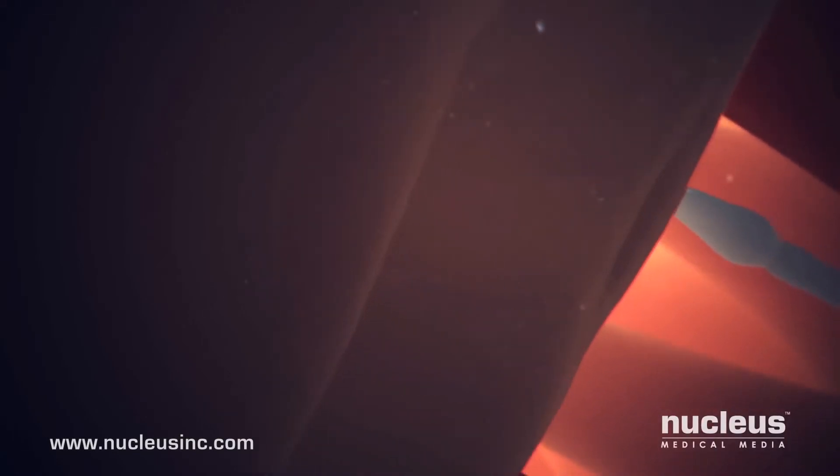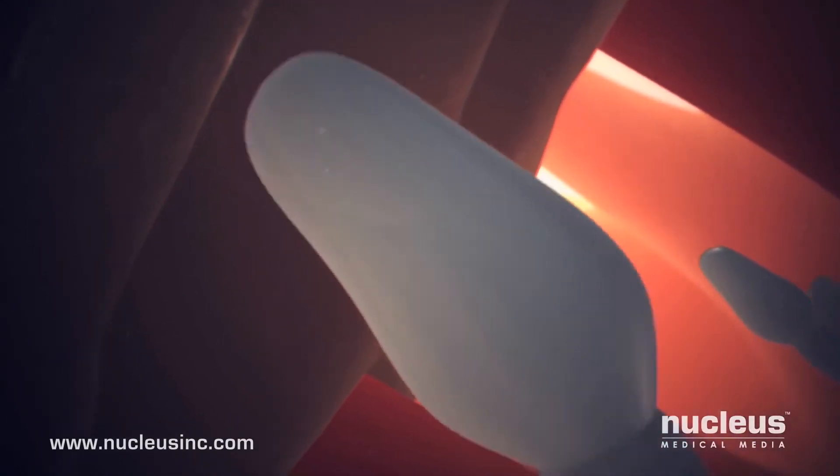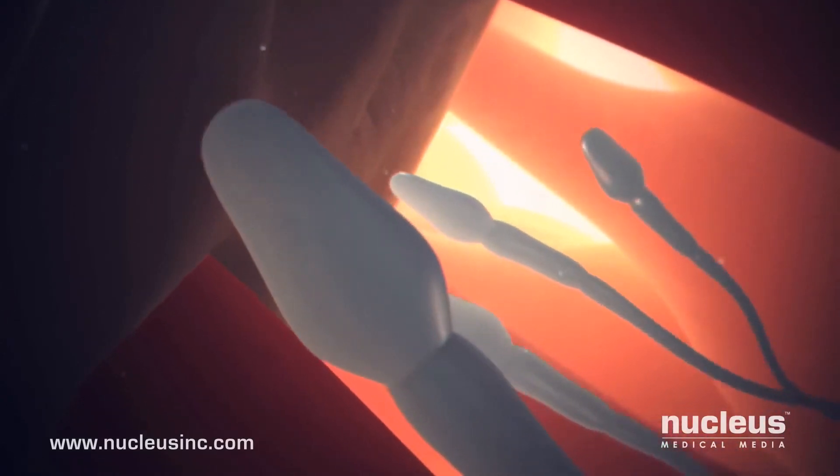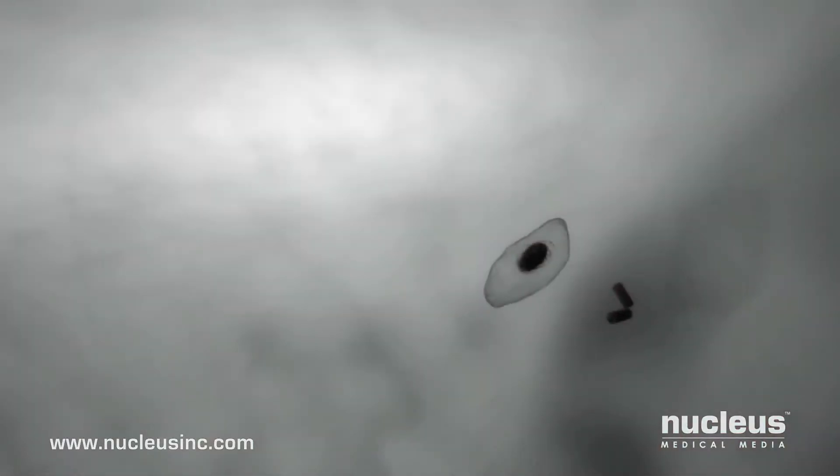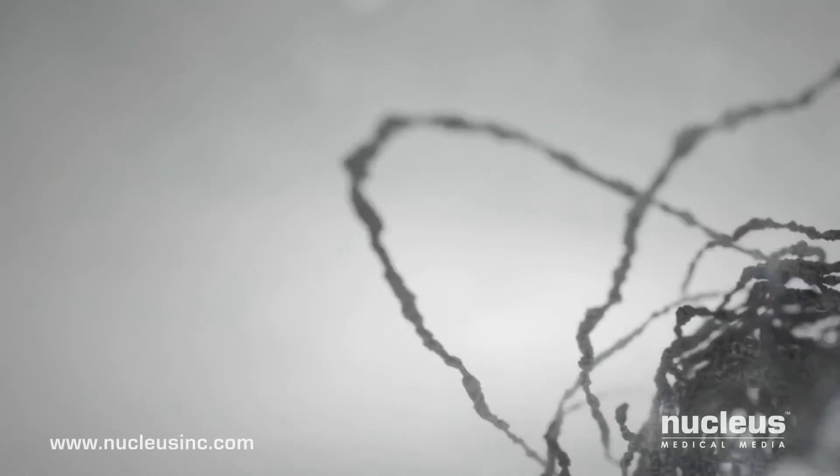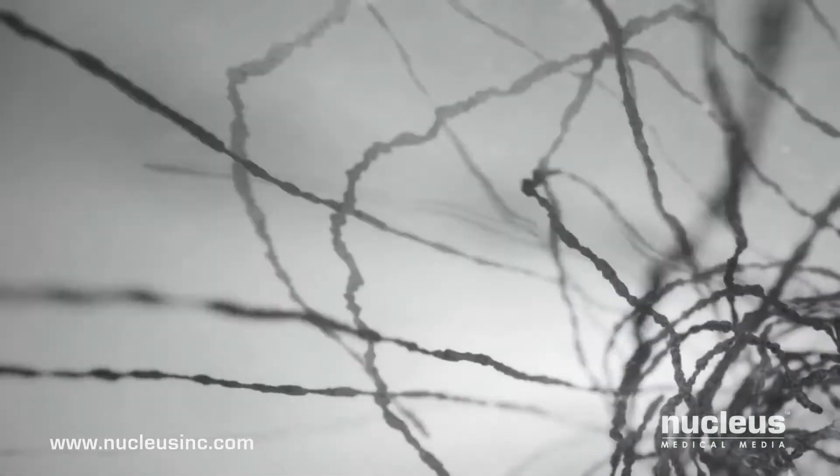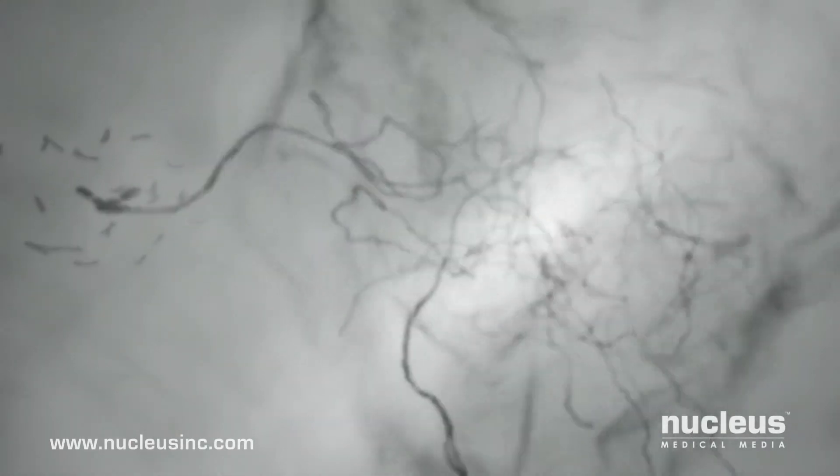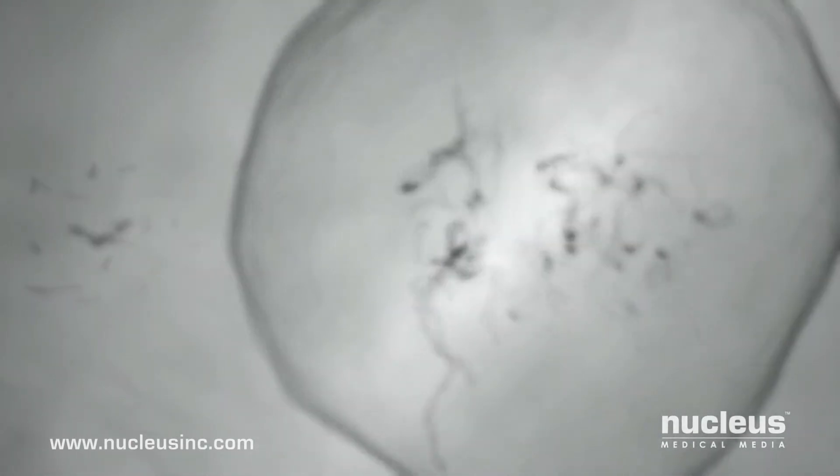Outside the egg, sperm are no longer able to attach to the zona pellucida. Meanwhile, inside the egg, the tightly packed male genetic material spreads out. A new membrane forms around the genetic material, creating the male pronucleus.